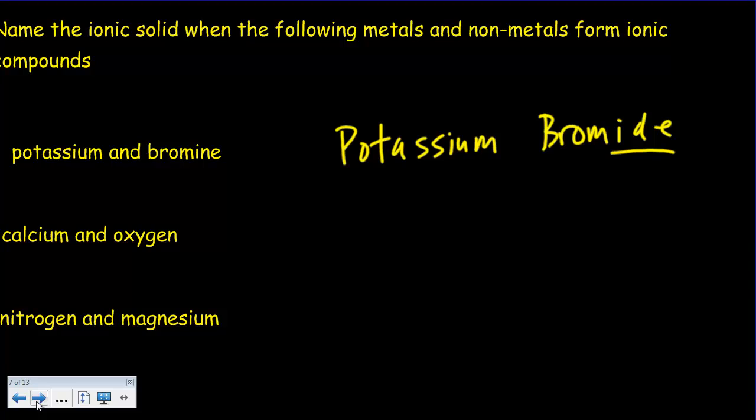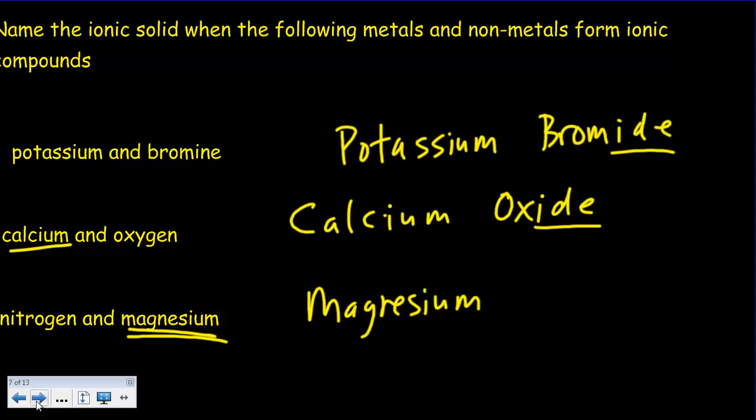Calcium and oxygen. Calcium is the metal, so it's going to be calcium, not oxygen but oxide. And nitrogen and magnesium, well it's magnesium. Check on your periodic table. The metal is magnesium and nitrogen will become nitride. So it's magnesium nitride.